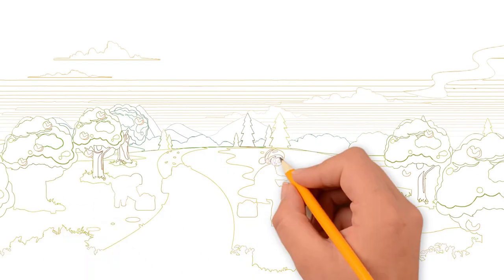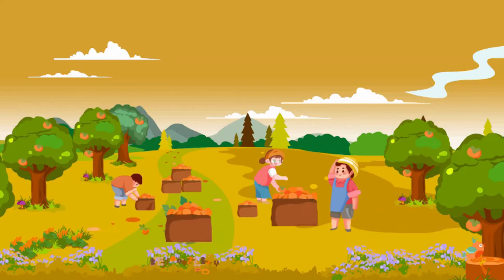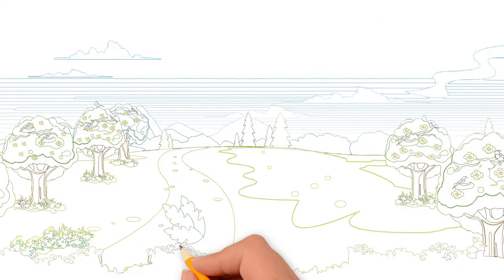Since then, farmers would leave an amount of persimmons for magpies every harvest season. This would attract more and more magpies to build nests here.